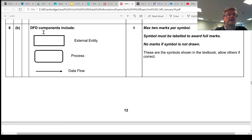You can use whichever one of the standard symbols that are used, and you'll still get the mark. So we've got the square one, and it's an external entity. We've got the rounded rectangle, or you could have done the circle, and that's a process, and obviously the arrow is the data flow.